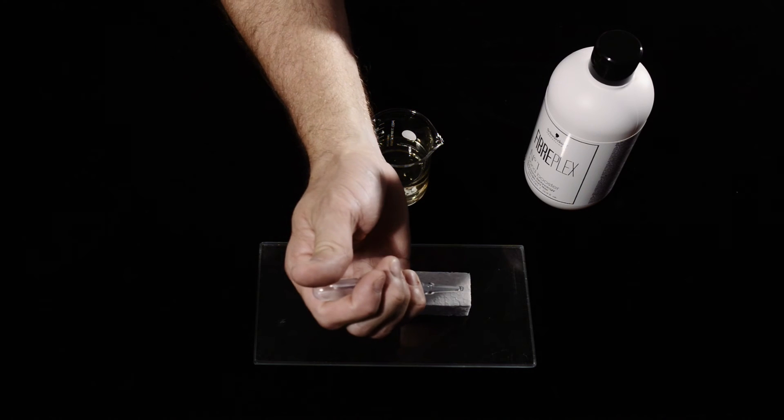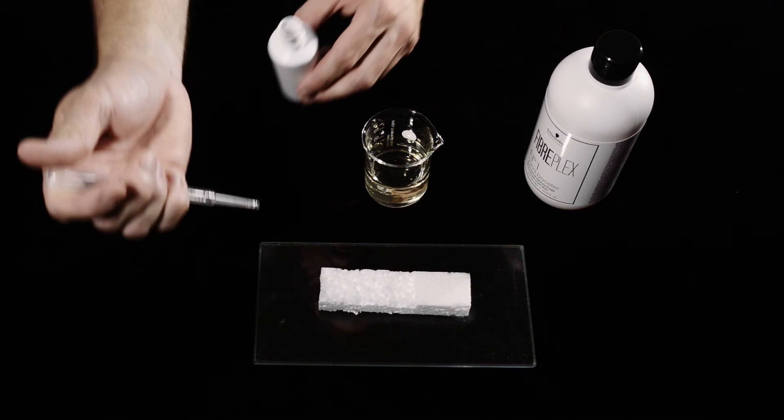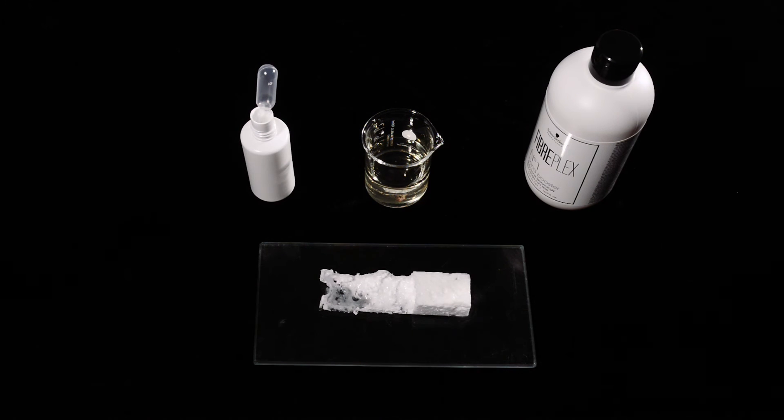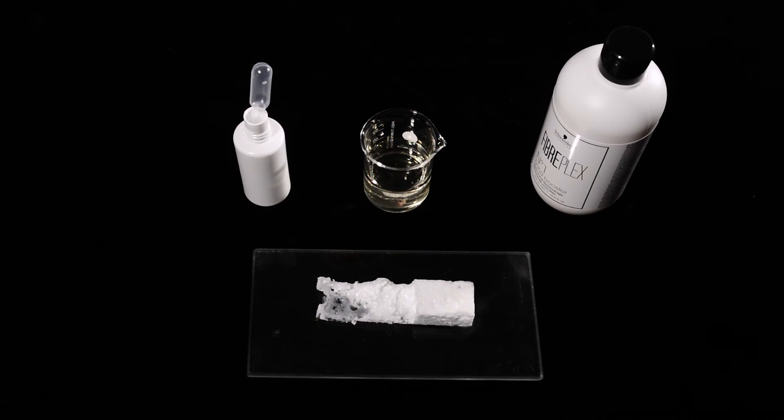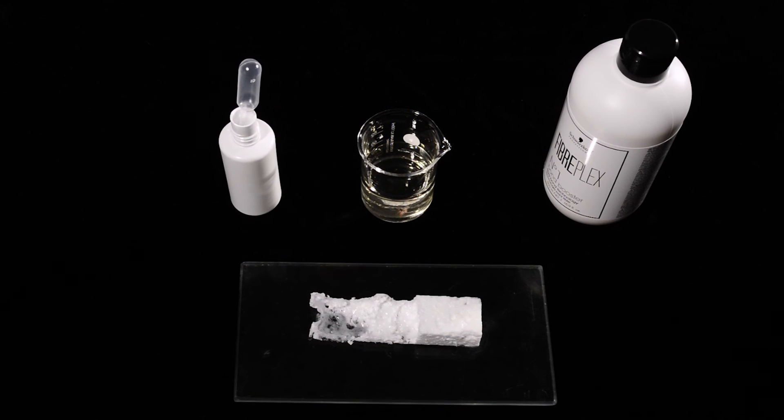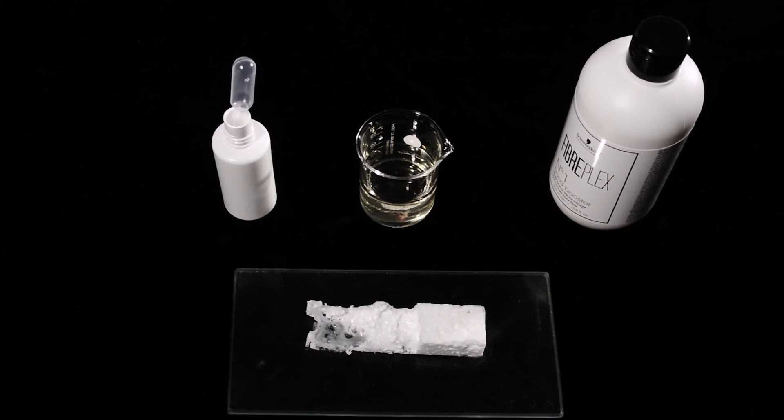I spread the chemical agent all over the styrofoam. As you can see, the end that wasn't protected by the fiber bond technology gets completely destroyed. The protected end stays completely untouched. This visualizes how the inner hair bonds are protected during chemical treatments to reduce hair damage dramatically.